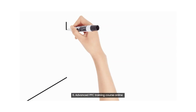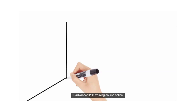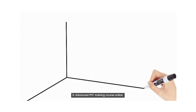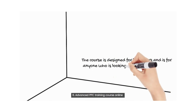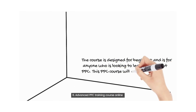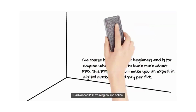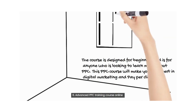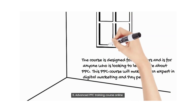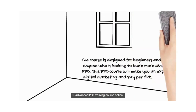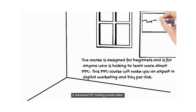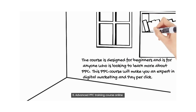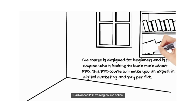Sixth course: Advanced PPC Training Course Online. This PPC course will make you an expert in digital marketing and pay-per-click. Topics covered in this course are search psychology, buying funnel, organizing keywords, testing ads, ad extensions, advanced features of ads, research keywords, organized groups, and campaigns. You should learn this course because it gives all the details from basics to advance for pay-per-click. The course gives you job assistance also.